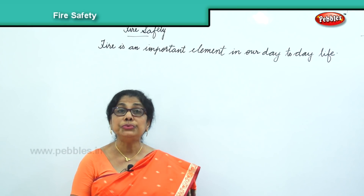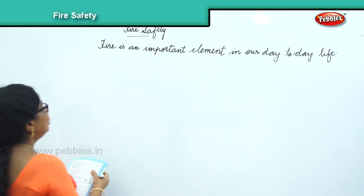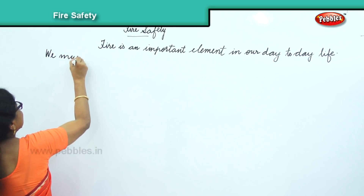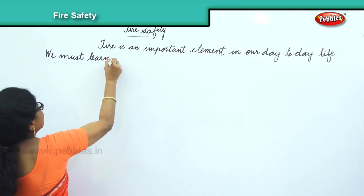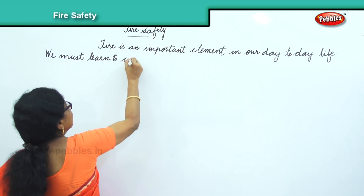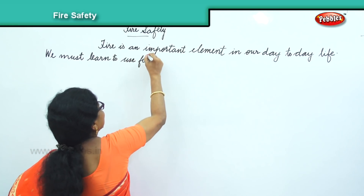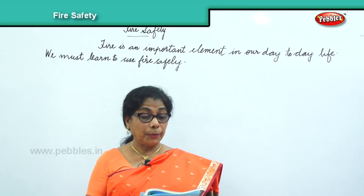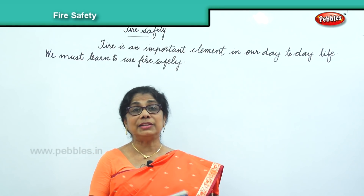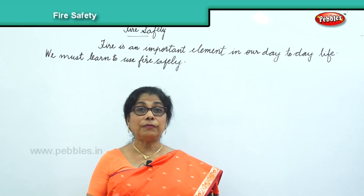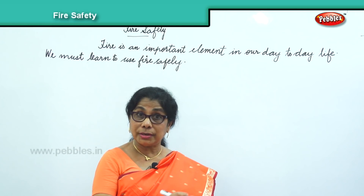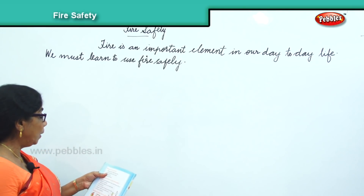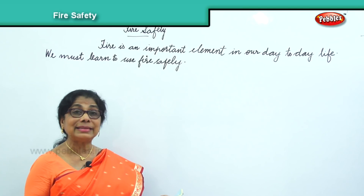So what must we do? We must learn to use fire safely. We must be safe. Now, how do fire accidents occur? Fire accidents occur in the kitchen when there is a leakage of gas.